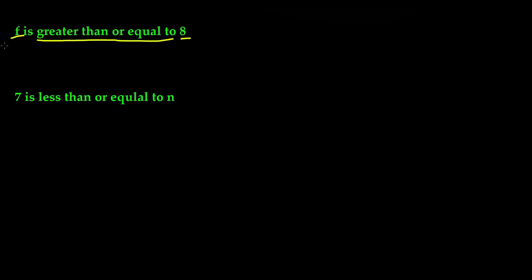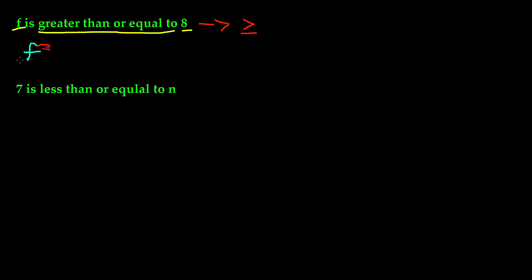To write this, first we write the variable f, because it comes first. Then it says greater than or equal to — the sign for this is the greater than symbol with the mouth open to the left, and then a line underneath that symbol. So we bring that symbol down. So f is greater than or equal to, and then finally the number 8. The value of f is greater than or equal to 8.